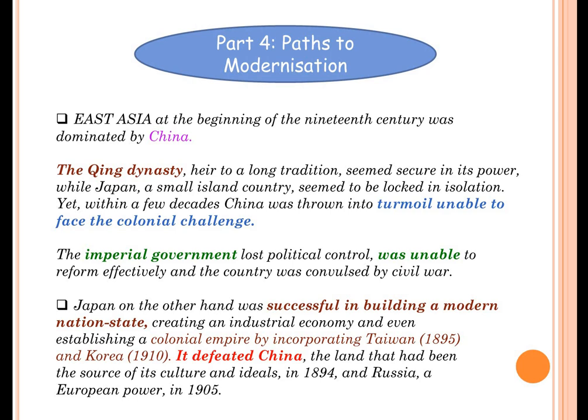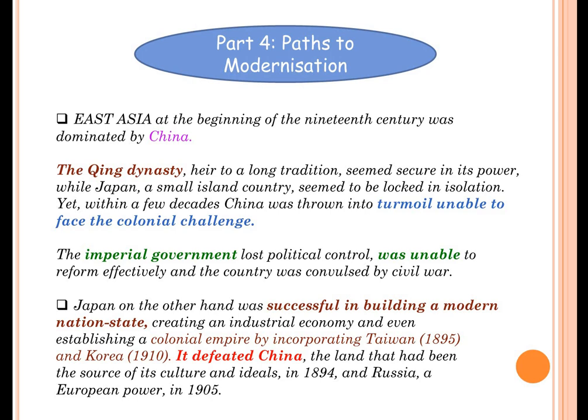Japan defeated China — the land was actually a great source for Japan in culture and ideals, but it defeated China because they had no other options in 1894. It also defeated Russia, which was a European power. So that was the strength of Japan to defeat all these places, though it was a very small island country which was completely locked in isolation.